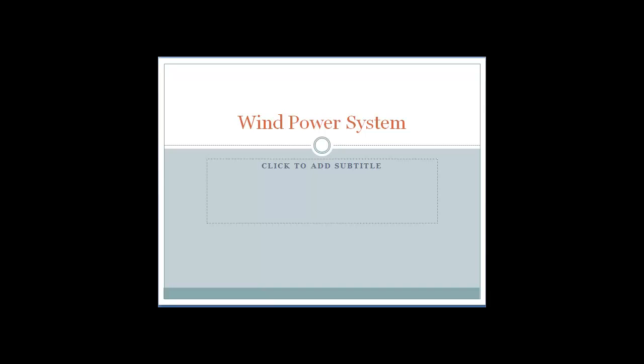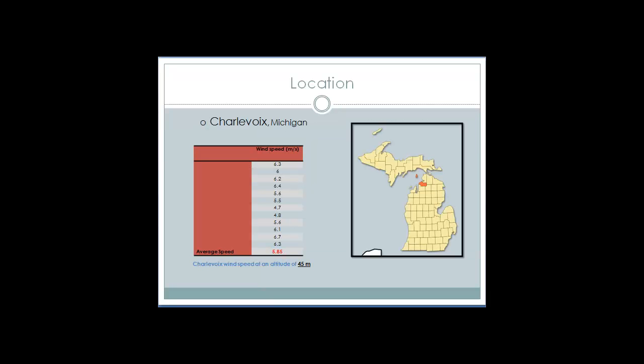For the wind power system, Charlevoix, Michigan was chosen. This choice was made based on the relatively high wind speed. At an altitude of 45 meters, Charlevoix has an average wind speed of 5.85 meters per second.